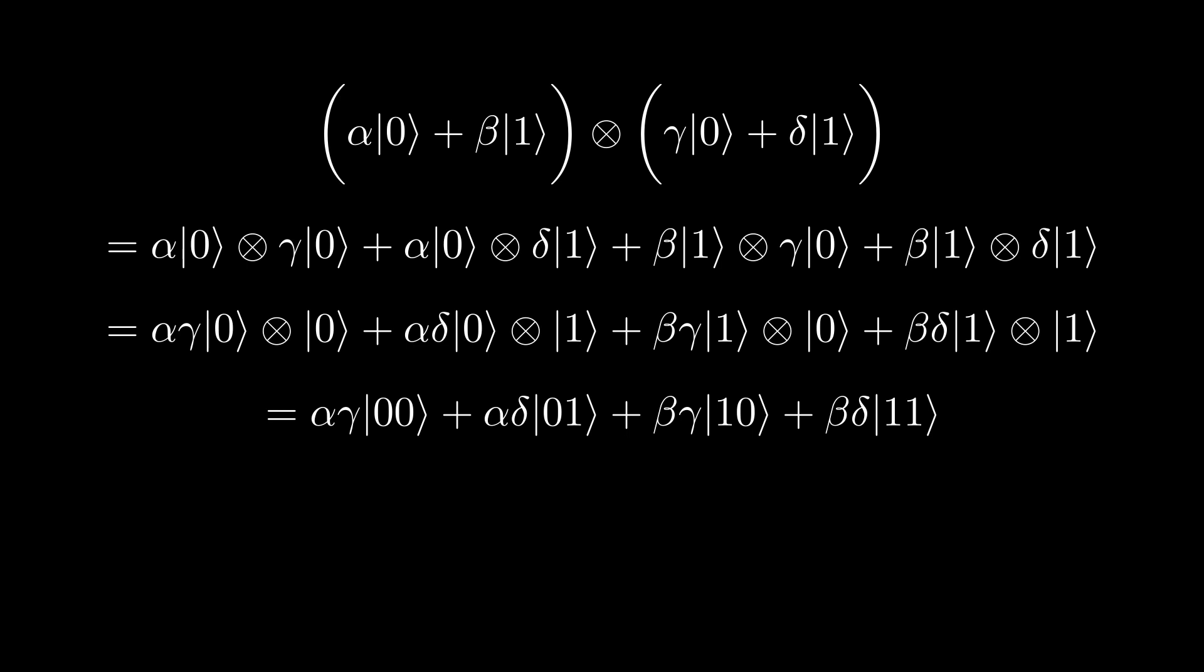As you can see, now we have four states: the zero zero, zero one, one zero, and one one states. This makes sense since those are the possible combinations of zeros and ones we can have with two qubits.